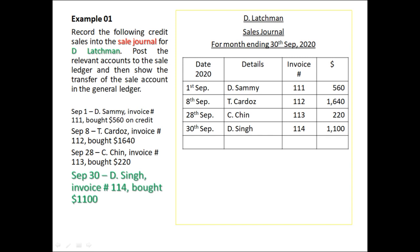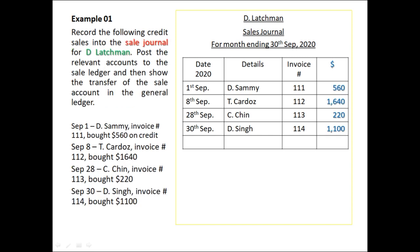After entering all transactions, we add up the amount column only — we do not add up the invoice column, as invoice numbers are just references, not monetary values. Adding $560, $1,640, $220, and $1,100 gives us a total of $3,520. In the detail column, we write 'transfer to sales account,' because this total is transferred to the sales account to reflect all credit sales made.